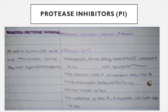Boosted protease inhibitors are not used on their own due to many side effects and drug interactions. Examples include atazanavir, darunavir, lopinavir, and ritonavir — the last two are most important. Ritonavir at therapeutic doses is poorly tolerated due to GI intolerance and major drug interactions, including hypercholesterolemia, which is dangerous especially for obese or cardiac patients.